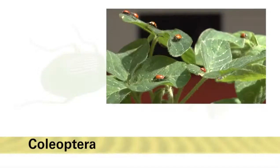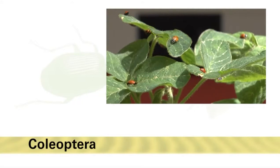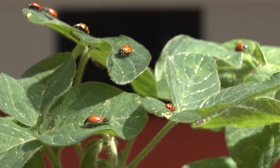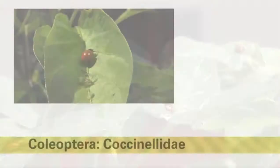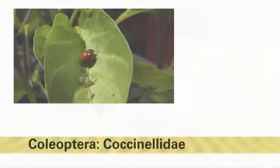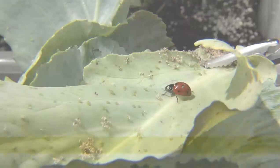Another important group of generalist predators are the Coleoptera, or beetles. This large and diverse order of insects includes many predatory species. Ladybugs or lady beetles in the family Coccinellidae are an important group of beetle predators within vegetable crops. Lady beetles feed on many soft-bodied insect pests, including insect eggs, small caterpillars, mealybugs, and scales. They are particularly important predators of aphids, which are small, sap-sucking pests found in nearly all vegetable crops.